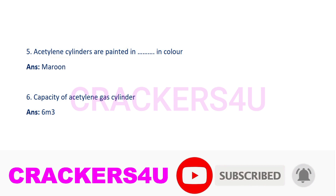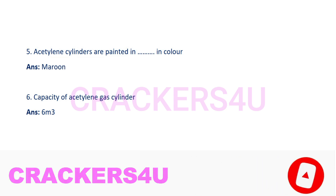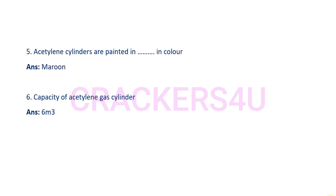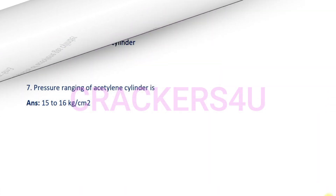Question number six: Capacity of acetylene gas cylinder is dash. Answer: Six meter cube.